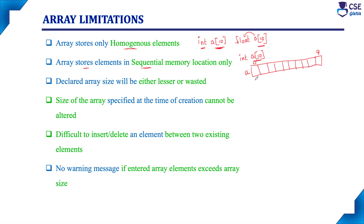Suppose if we consider starting memory address 500 and ending at 520 — totally 20 bytes will be allocated. If 500 to 520 memory is free and continuous, memory will be allocated. For example, if 500 to 510 memory is free and 300 to 310 memory is free, we only get 10 bytes in each location. Since continuous 20 bytes are not available together, it will not be allocated — it will raise an error: there is not enough memory space. Wherever continuous 20 bytes of memory are free, only that memory will be allocated.